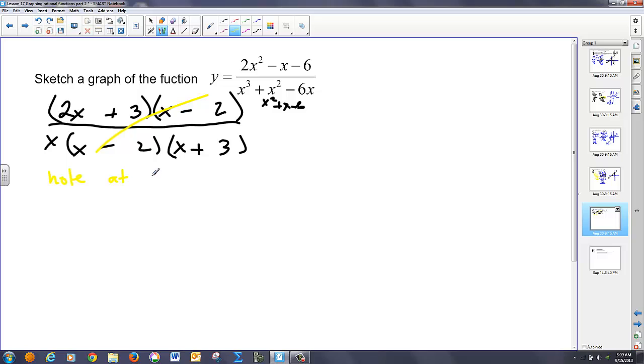Hole. At. X minus 2. Equals 0. So at x. Equals 2. So. If my hole is at x equals 2. I'm going to. Plug. 2. Back into my function. That remains. So that's the. 2x. Plus 3. Over. X. Times x. Plus 3. Which is going to. Give me. 7 tenths. So my hole. Is at. 2. And. 7 tenths.